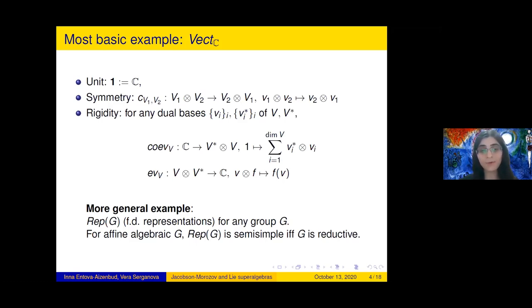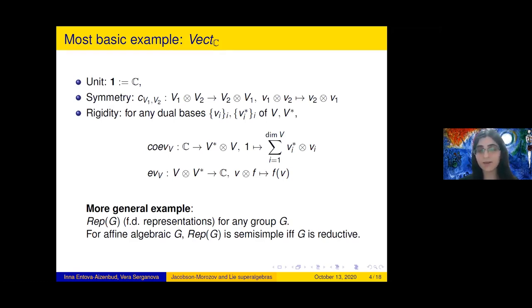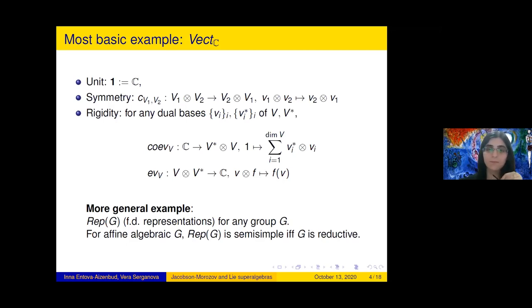More generally, for any algebraic group G we can consider its finite dimensional representations, which also form a tensor category. Dimension here is the usual dimension of a representation. When is this category semi-simple? For a finite algebraic group G, the category rep G is semi-simple precisely when G is reductive — this is the setting relevant for the Jacobson-Morozov lemma.